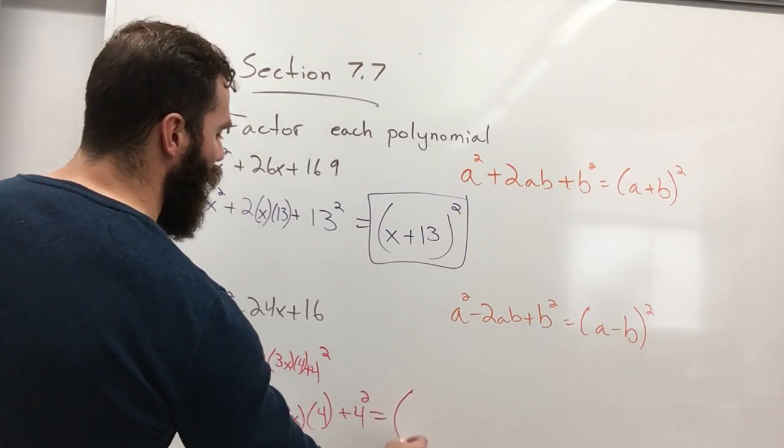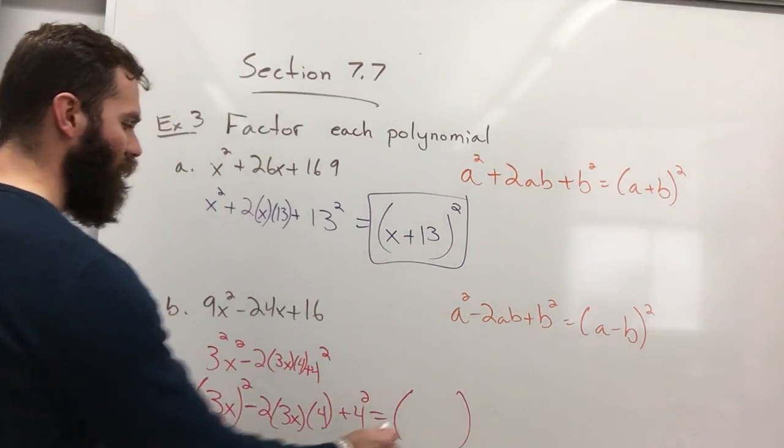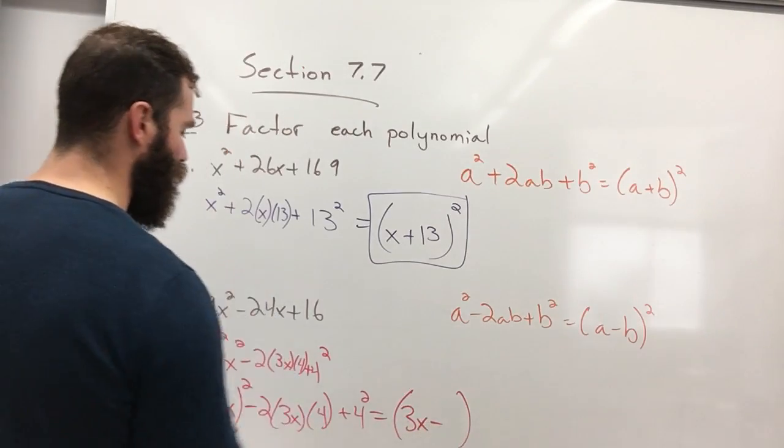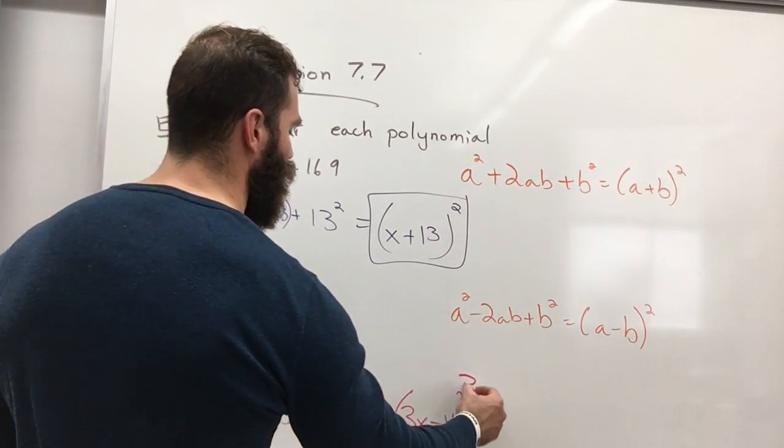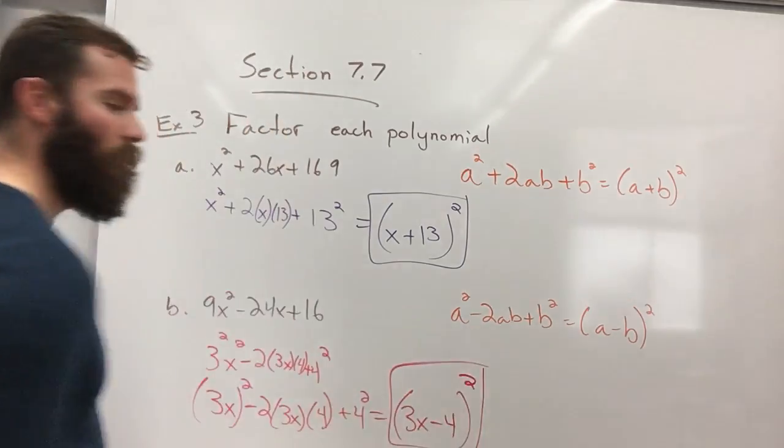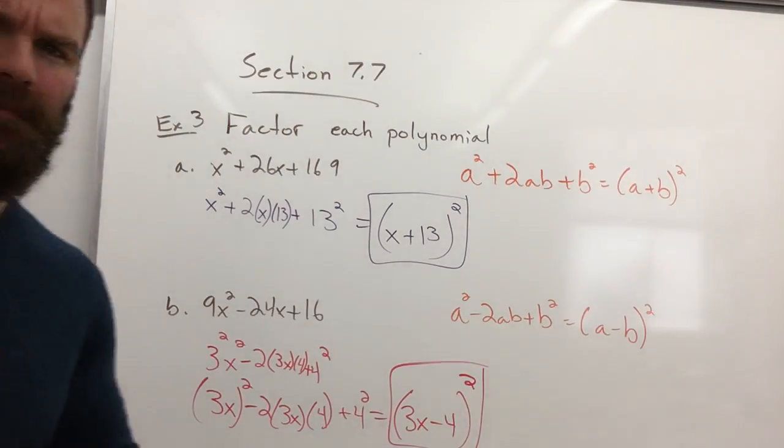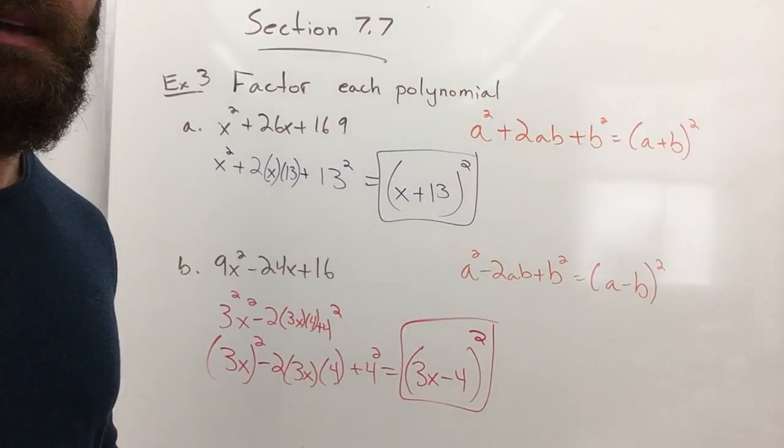Now let's use that pattern a, which is 3x, minus b, which is 4, squared. Boom. And you should be able to see that, yeah?